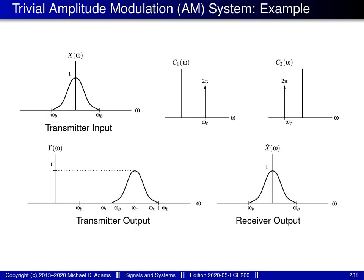We have an example illustrating how the trivial amplitude modulation system behaves in terms of frequency spectra. The transmitter takes the input spectrum (top left) and shifts it by ω_c to yield the output spectrum (bottom left). The receiver then takes that spectrum and shifts it by −ω_c, yielding the spectrum shown bottom right. Clearly the spectrum of the receiver output equals the spectrum of the transmitter input, which is what we desire.